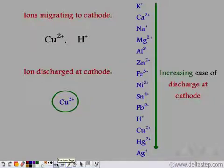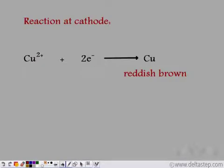So what is the reaction taking place at the cathode? We have copper ions — since they are getting discharged at the cathode, they take two electrons and form neutral copper metal. The neutral copper is reddish brown in colour and this is the product being formed at the cathode.